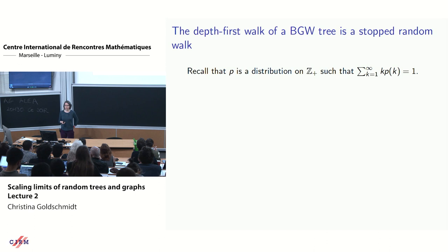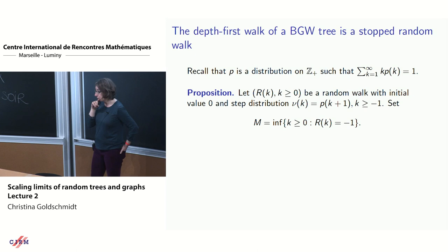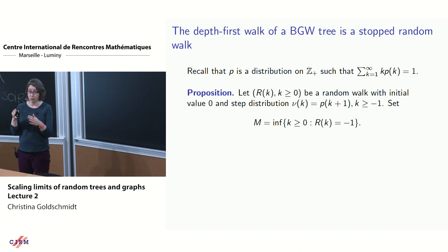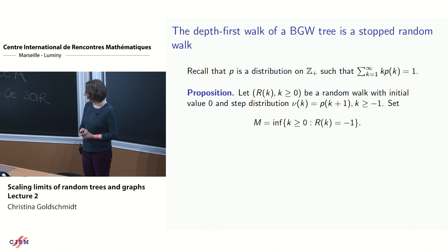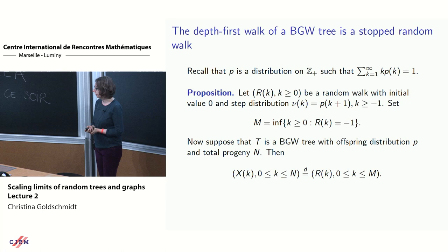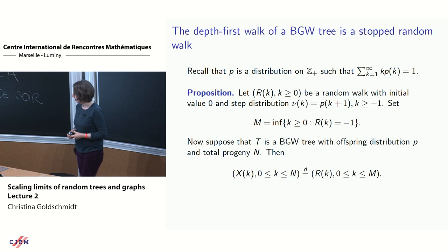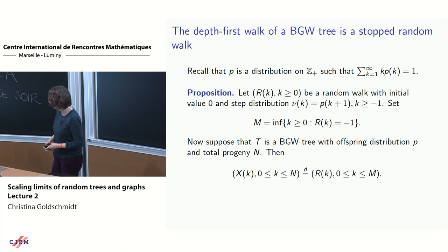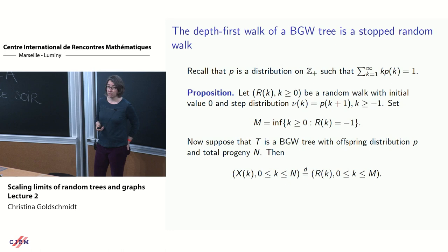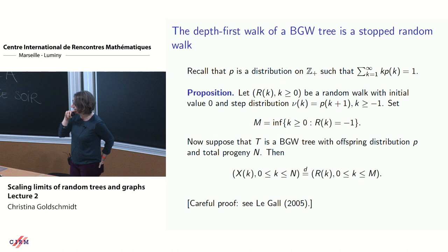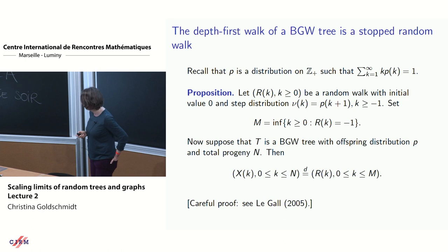The depth-first walk of my BGW tree is a stopped random walk. Our offspring distribution has mean 1. If we take a random walk starting at 0 with step distribution equal to a shifted version of the offspring distribution — subtracting 1 — and let M be the first time it hits minus 1, then that has the same distribution as the depth-first walk of the Galton–Watson tree stopped at total progeny n. For a careful proof, see the survey paper of Legall.